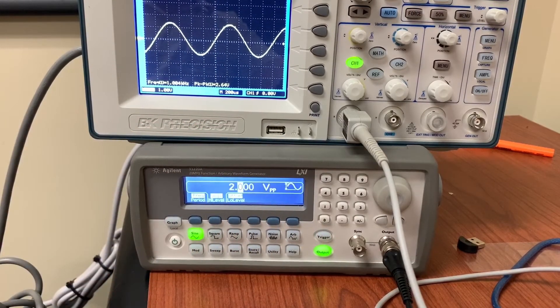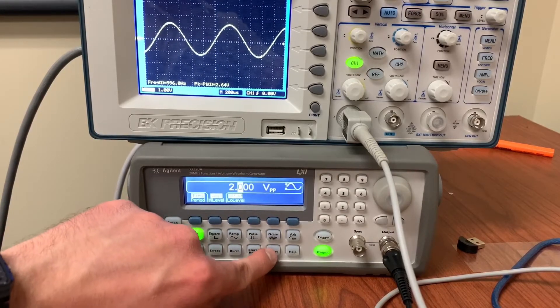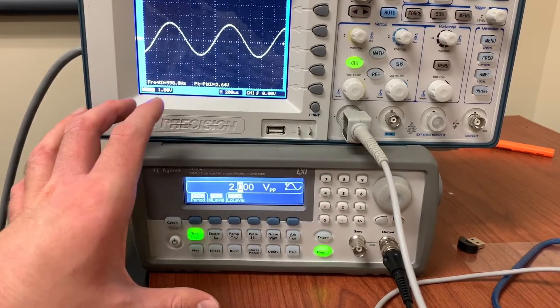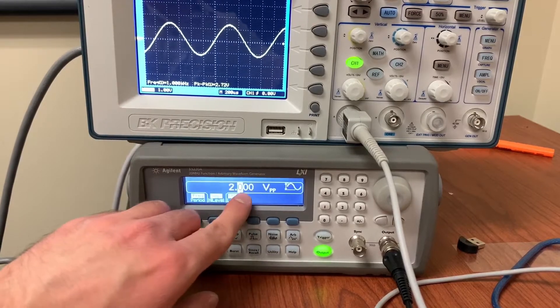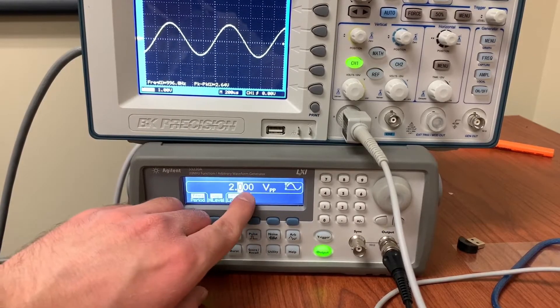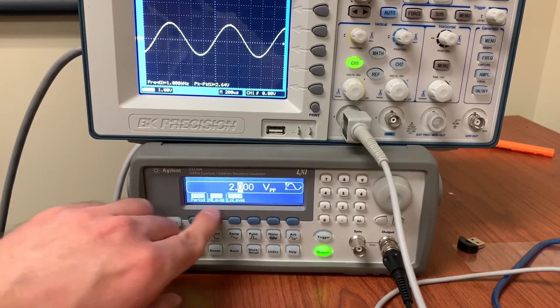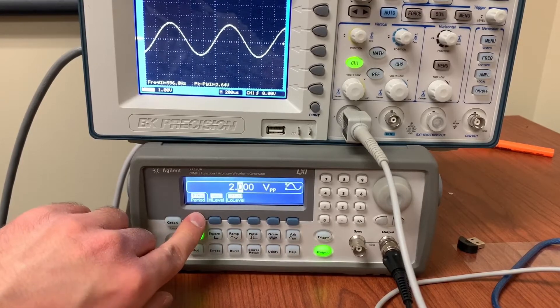And one way you could do it is to just turn the knob here and try and eyeball it until it's about where we want it to be, either by raising or lowering the voltage or the amplitude. So that's pretty close. So 1.5 volts peak to peak will give us 2 volts peak to peak through this resistor divider.